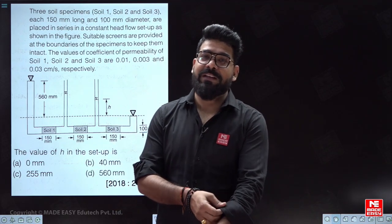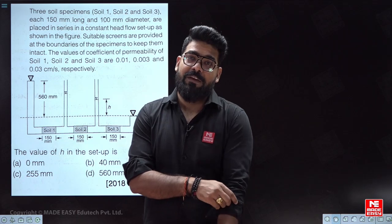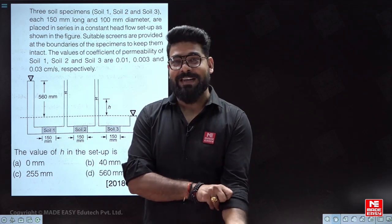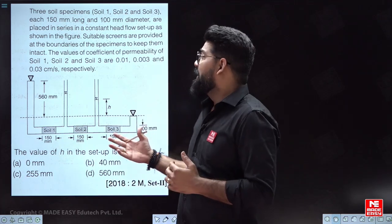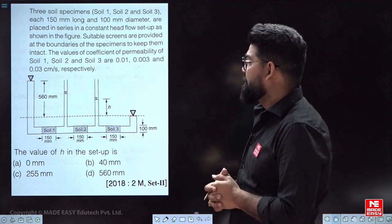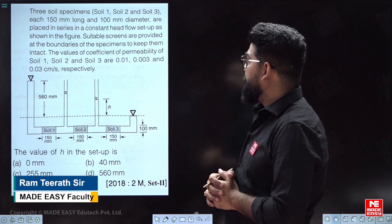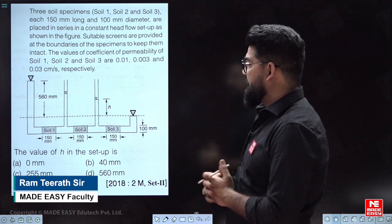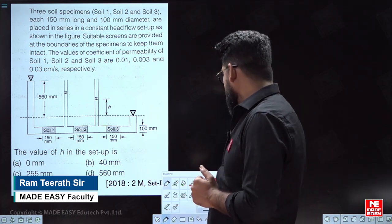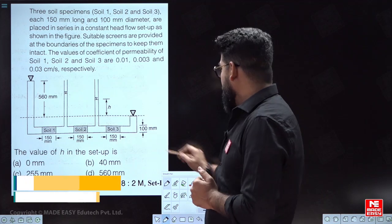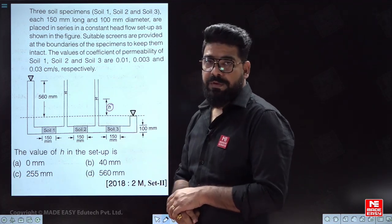Hello everyone. Here we will discuss a very good question — a favorite of IIT. There are three soils, 150mm long and 100mm diameter, placed in series. The question is asking for small h, which is the head loss in the third soil.